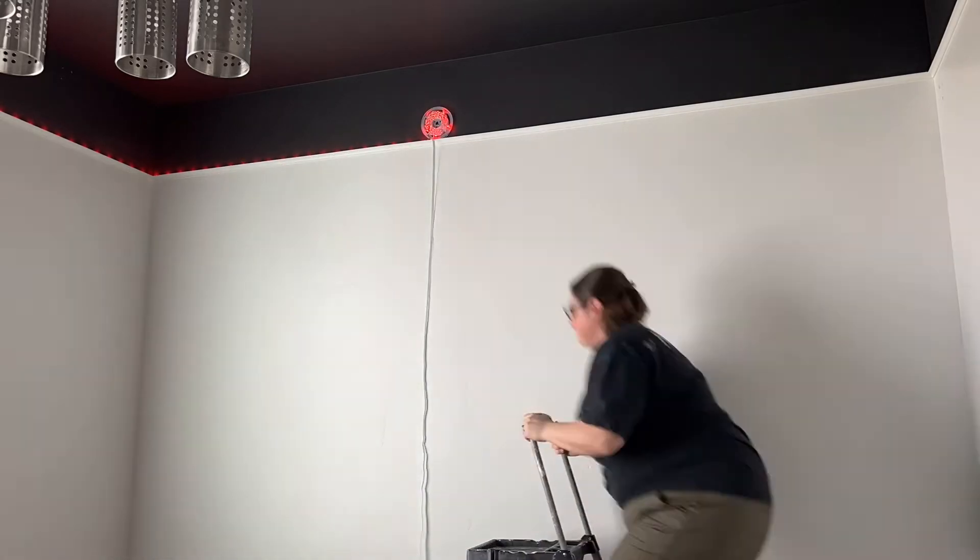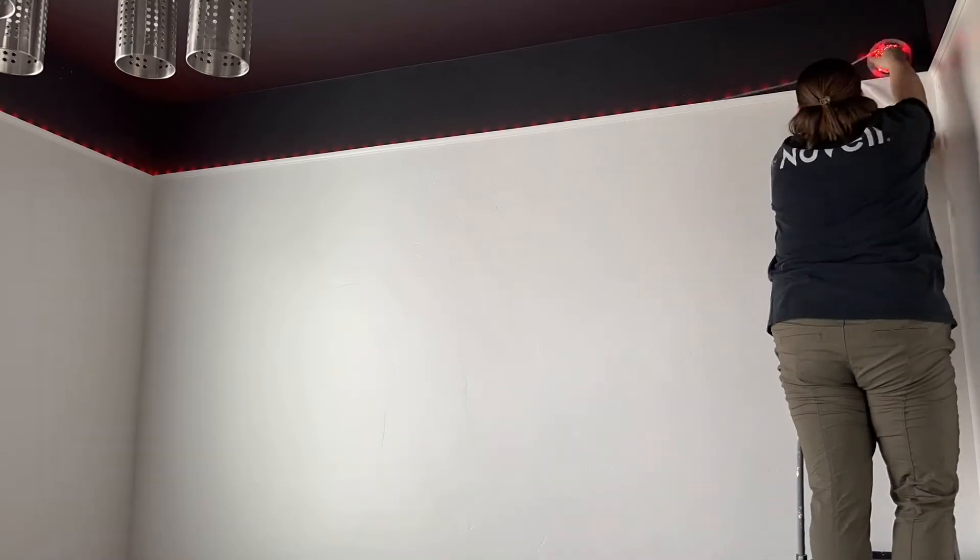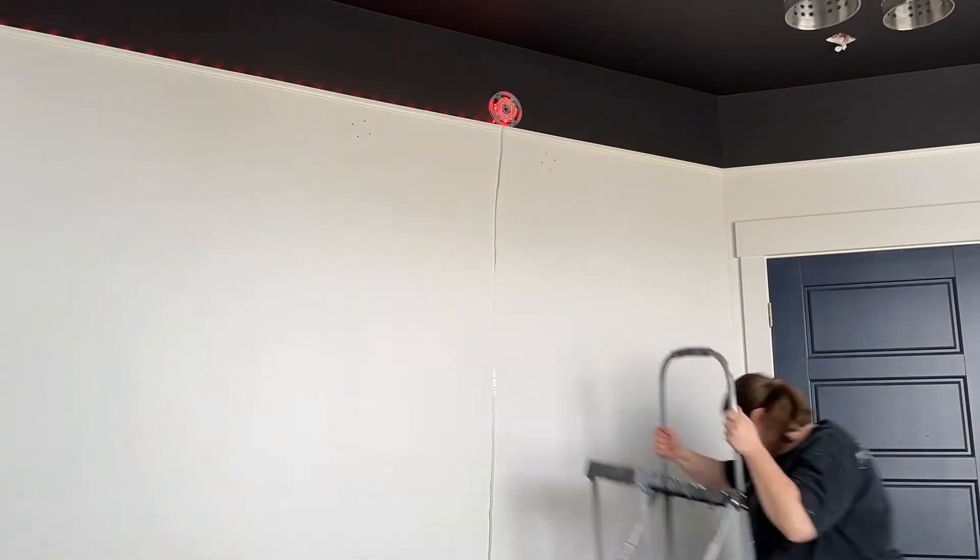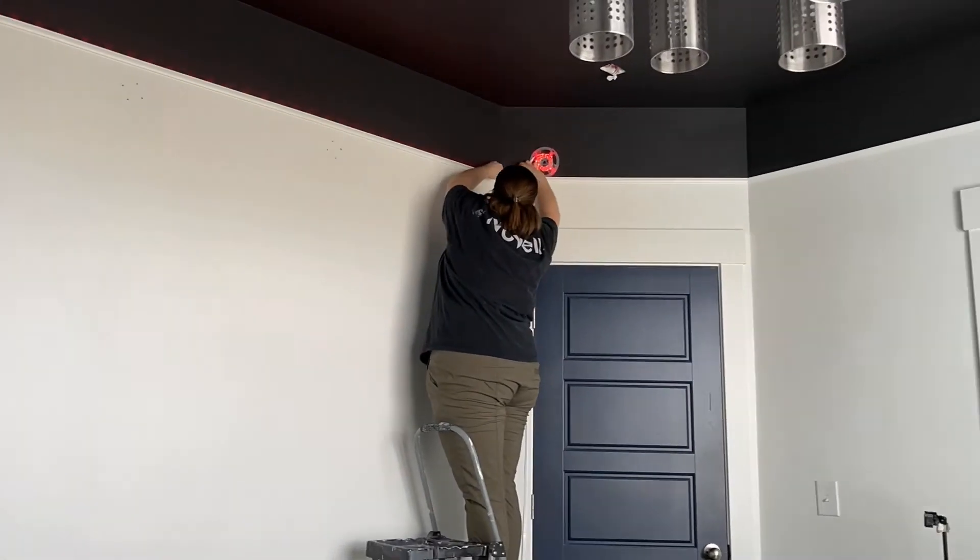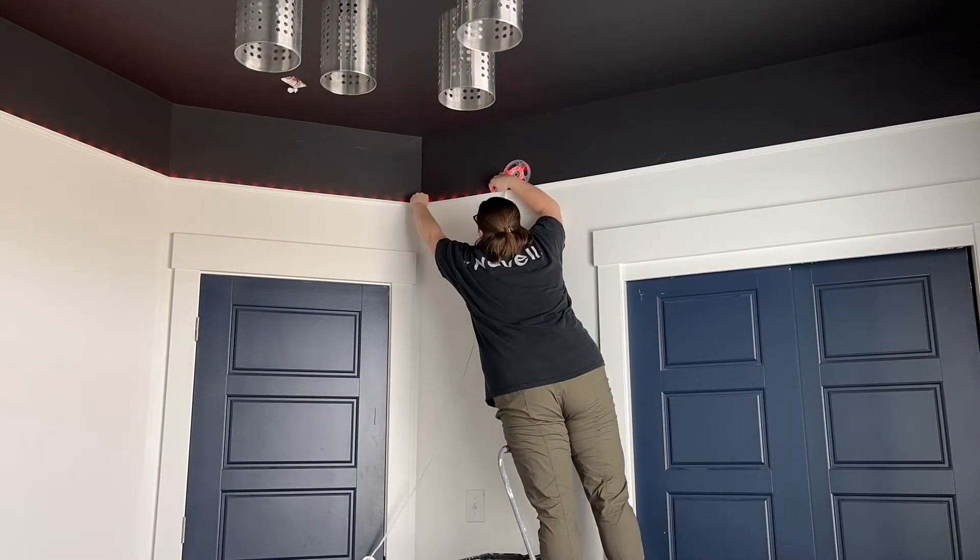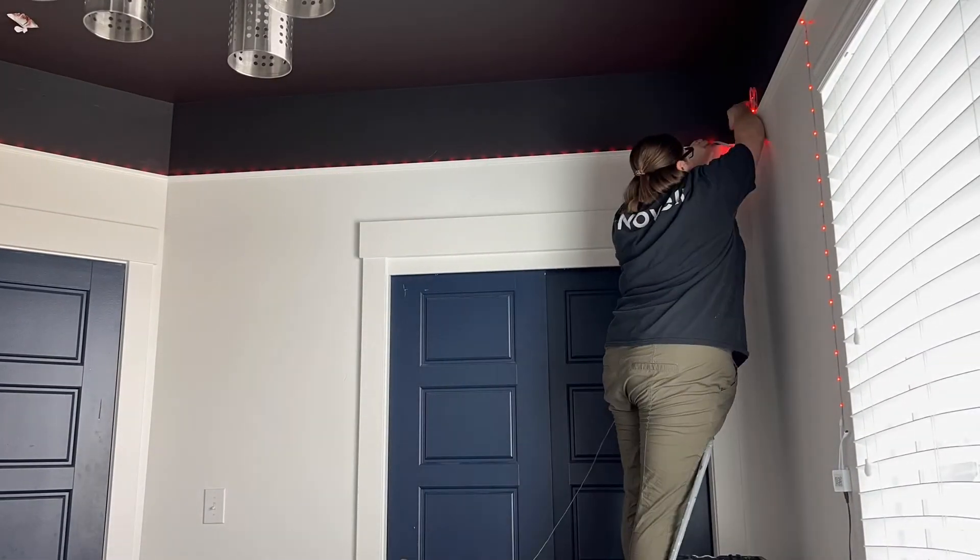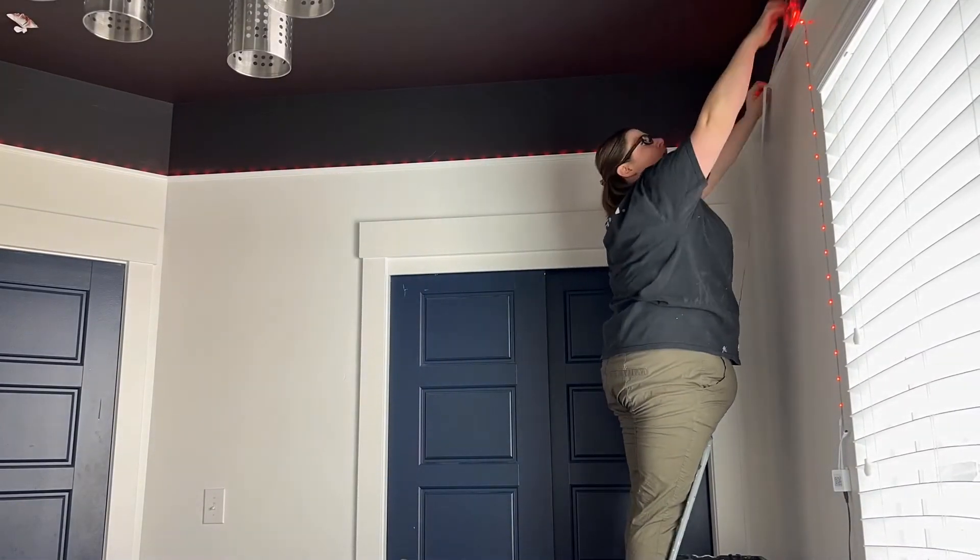I'm sure the connectors are a better way of handling the corners than we did, but who knows. Maybe I damaged the strip and they'll break on me, but for now they're working just fine. So you're just going to continue to pull off the adhesive backing and press the lights into place. It took us less than 30 minutes to go around the entire room and it was super easy to do.